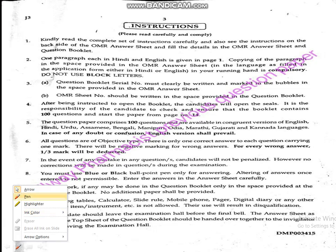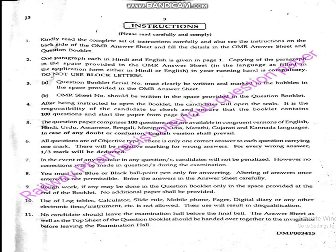Going through the instructions: number 1 clearly states this was an OMR answer sheet based exam, but this time it is a computer based exam. Instruction number 4 states the question paper consists of 100 questions. Instruction number 6 states one-third marks will be deducted for every wrong answer — meaning three wrong answers result in one mark deducted. So negative marking was present.